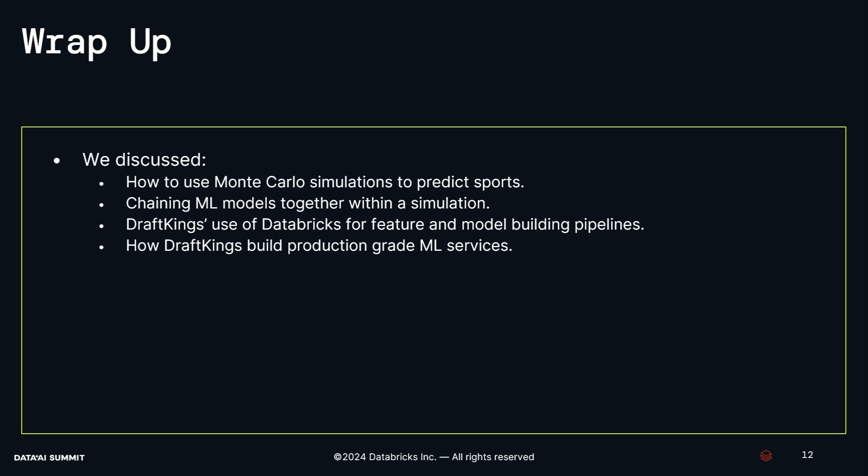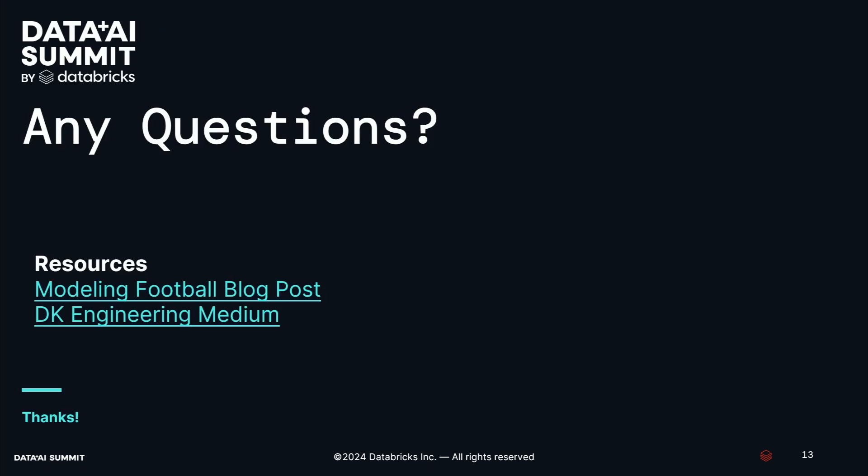To wrap up: we talked about Monte Carlo simulations for sports predictions and how you can chain individual machine learning models into a more complex system within Monte Carlo simulations. We've seen how DraftKings is using Databricks for data science workflows and the SDLC, and a flavor of how DraftKings is building production grade machine learning services. There's a blog post that dives into a similar football example with lots of code examples, and the DK Engineering Medium has articles from our data science teams talking about modeling and from our architecture teams about our production system.